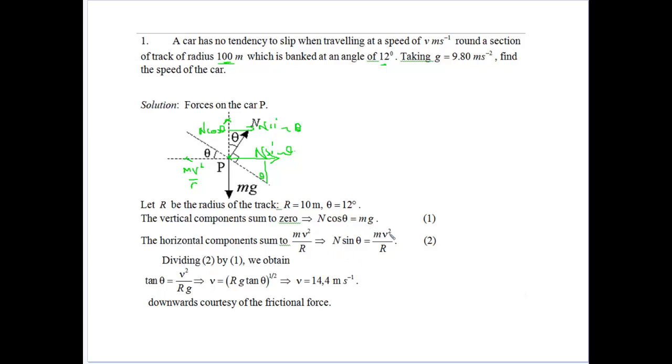So how do we find V here? We know what theta is, we don't know what n is, so we want to eliminate that. If we divide equation 2 by equation 1, that eliminates the normal force. So tan theta equals V squared on RG. We know R is 100, G is 9.8, and theta is 12. Put that in, we get 14.4 metres per second.